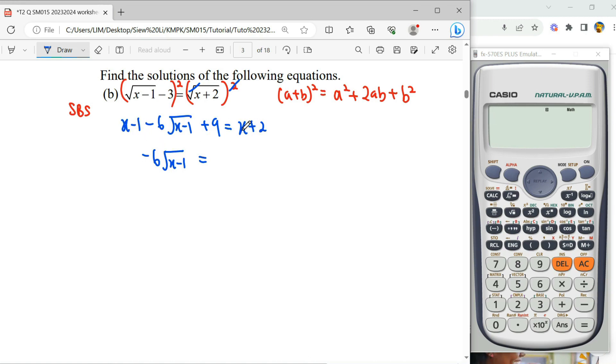So X minus X, 0. And then this one, negative 1 plus 9, positive 8, minus 8. So we become negative 6, we simplify.